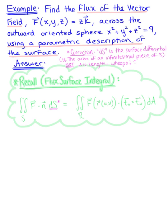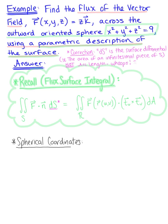In this example, we have an outward-oriented sphere centered at the origin with radius ρ = 3. Anytime we're working with a surface that's a sphere and we're asked to use a parametric description, it's a pretty good assumption that we're going to use spherical coordinates to parametrize this surface. Let's recall what we know from spherical coordinates and then convert this to that arbitrary two-parameter description.